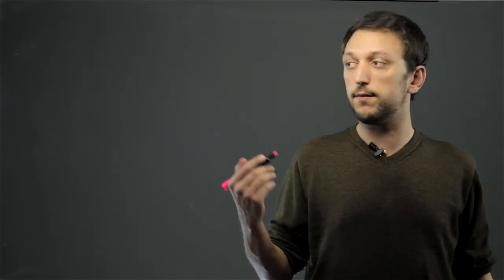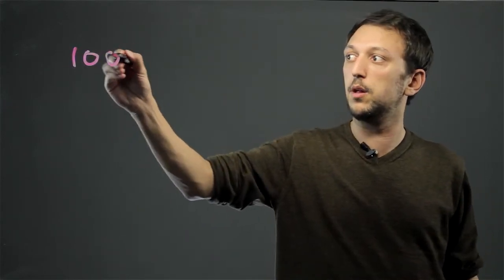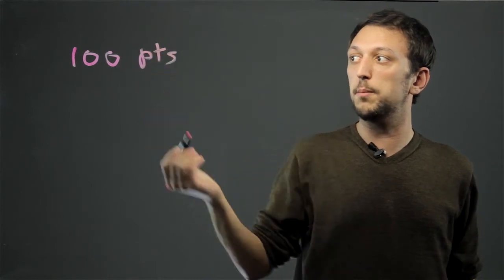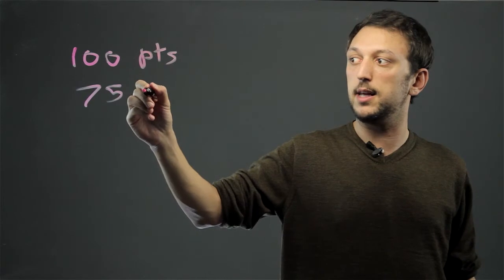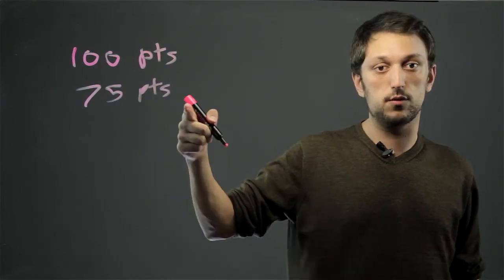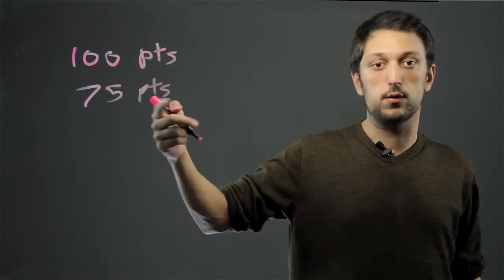For example, on a test, if the test is out of 100 points and the mean score is 75, that means that's the mathematical average of all the test scores that the students got.